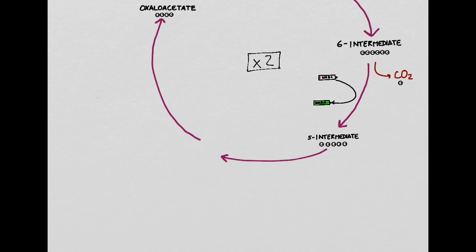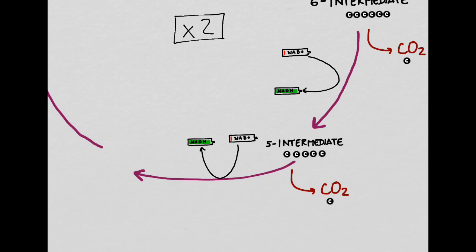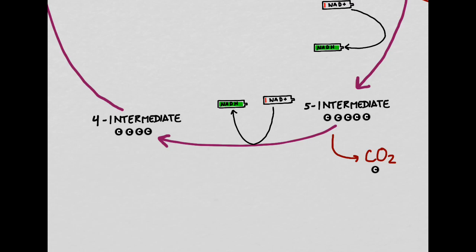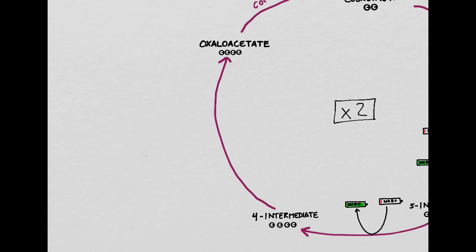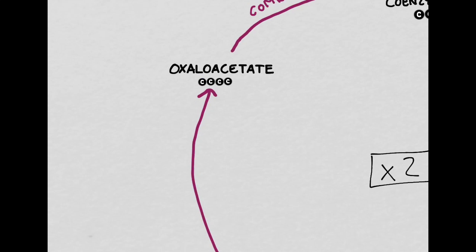Now we have a five-carbon intermediate, and we need to make it into four-carbon oxaloacetate. We're going to remove another carbon and make more carbon dioxide — this is where more of the CO2 made during respiration comes from. Just like before, we use the energy released from breaking open the five-carbon intermediate to recharge NAD+ into NADH. We now have a four-carbon intermediate, which is almost like oxaloacetate, but we still need to go through a couple more reactions to convert it.